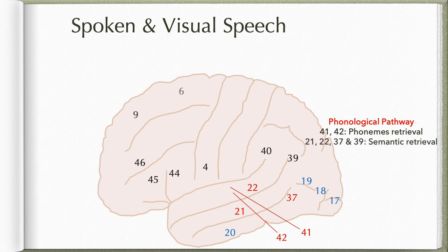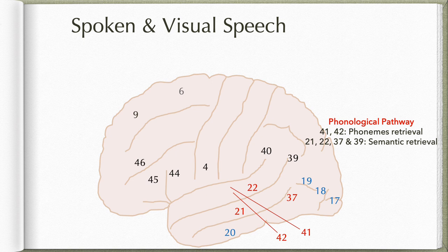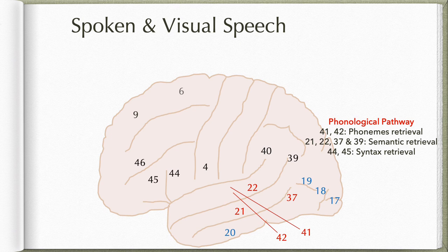This information is then shifted to area 21 in the middle temporal gyrus, area 22 (the higher association area for the auditory pathway), area 37 at the junction between temporal and occipital lobes, and area 39 (the angular gyrus). Here we have semantic retrieval — the words are put together, and the meanings are established. The information is also sent to areas 44 and 45 for syntax retrieval, which helps retrieve conjunctions like 'in,' 'of,' 'or,' and 'and' to connect semantics into a meaningful sentence.